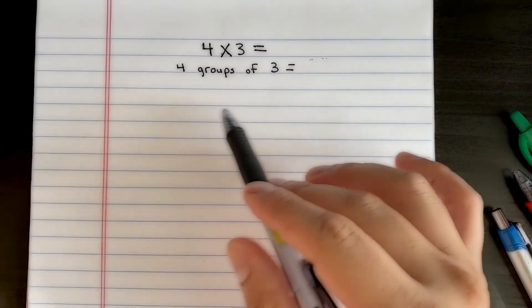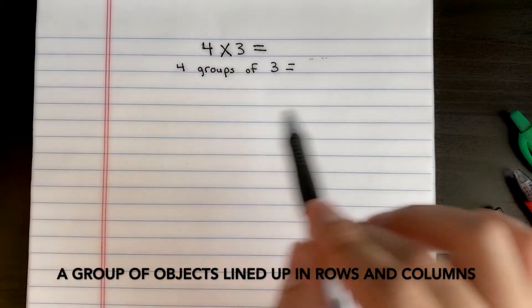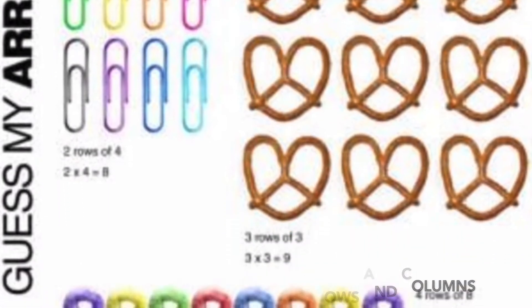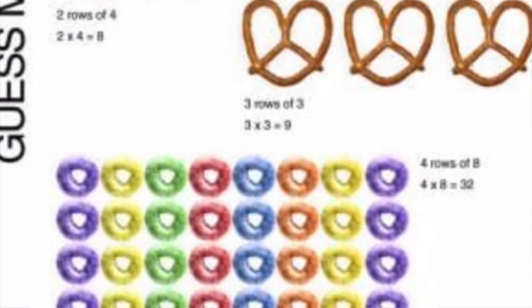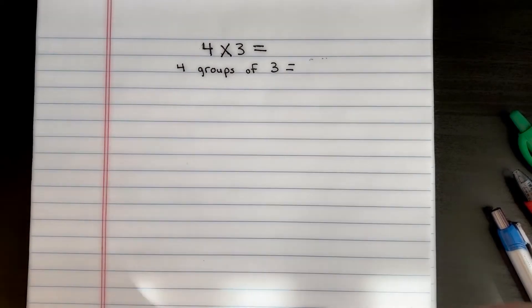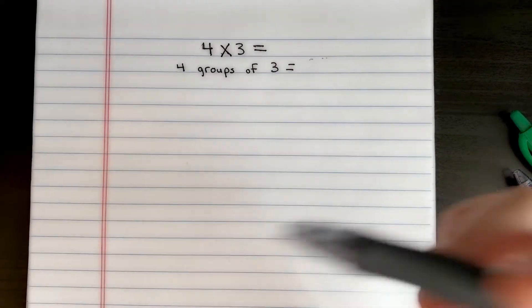An array is just a group of objects that are lined up in rows and columns, nice and neat. But the first thing you need to know is, what is a row and what is a column?